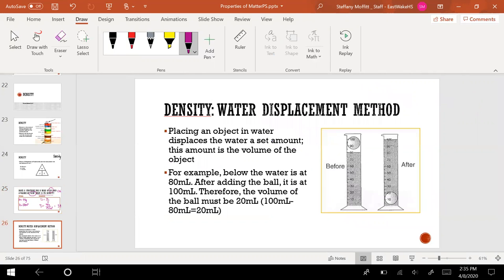Now density has this weird thing where we can find the volume based on what we call the water displacement method, and we do this a lot in the lab. So if we have a graduated cylinder over here, we can place an object in the water and the amount that the water level changes is the exact volume of the object.